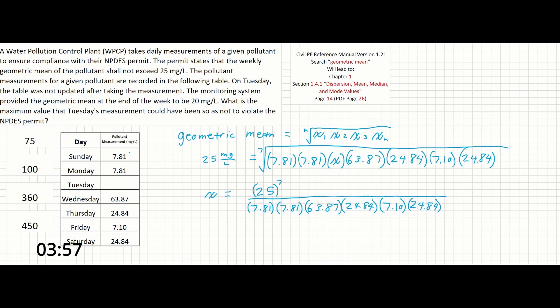Solving for x, we find that x equals 357.6 milligrams per liter, and our closest answer is going to be 360.